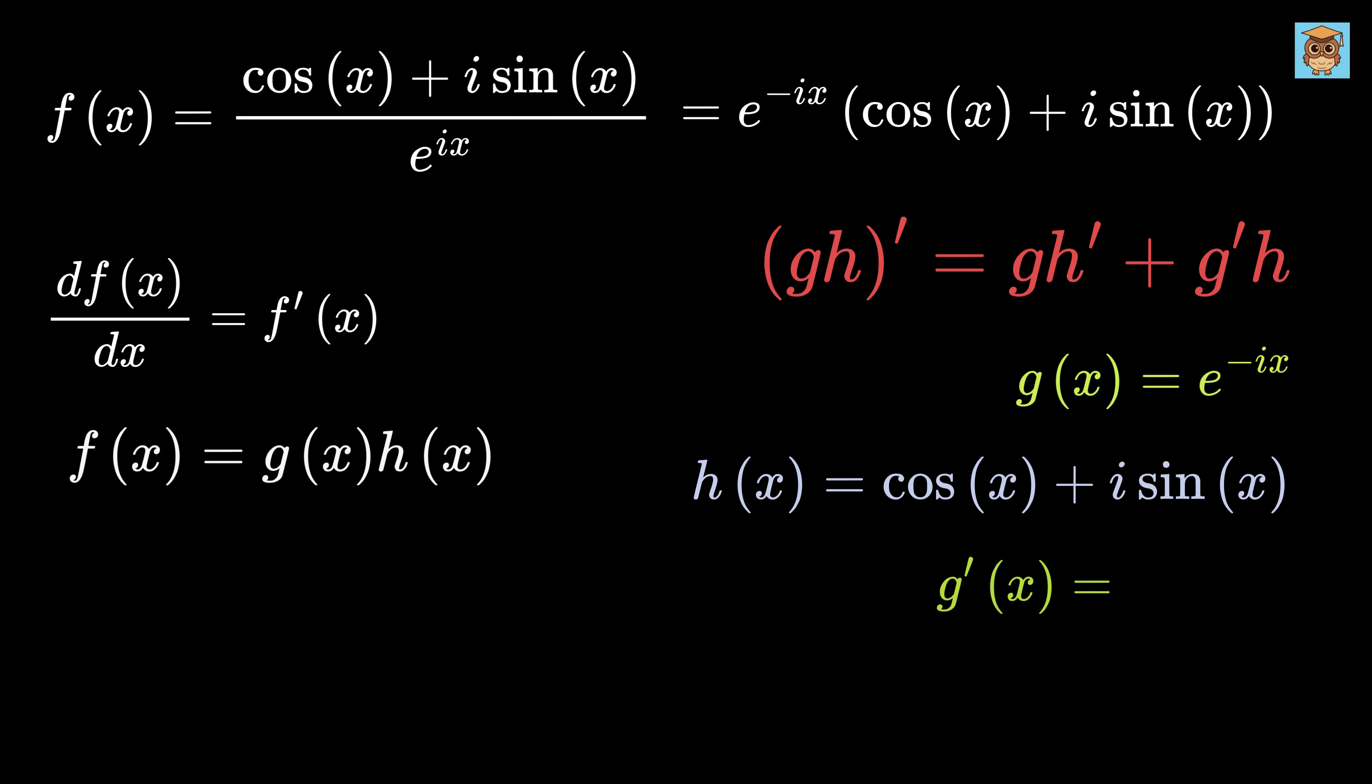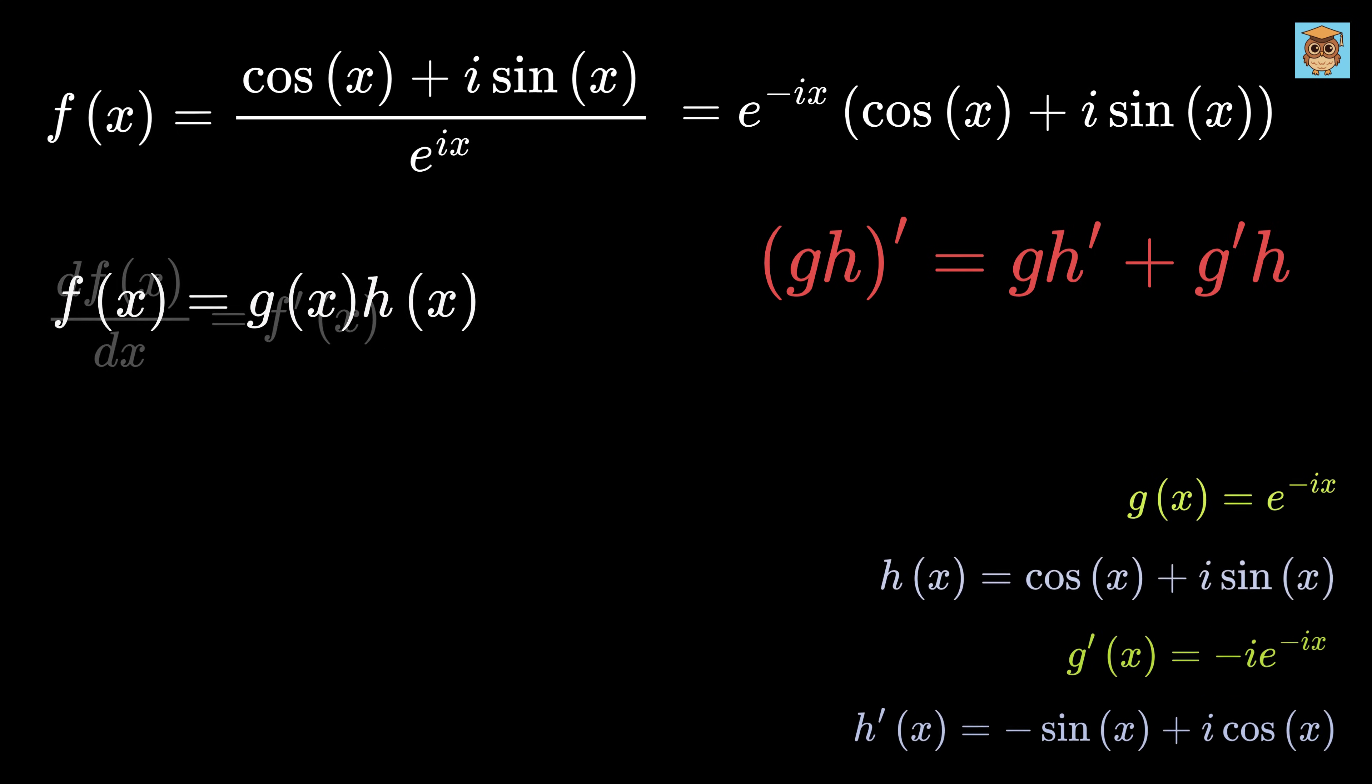Also, the derivative of g(x) or g prime will be minus i times e to the -ix and h prime will be derivative of this. Derivative of cos(x) is minus sin(x) and derivative of i times sin(x) equals i times cos(x). So h prime equals minus sin(x) plus i times cos(x).